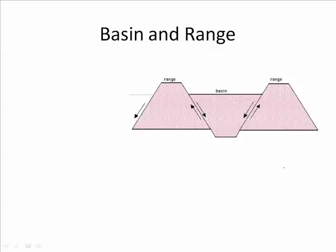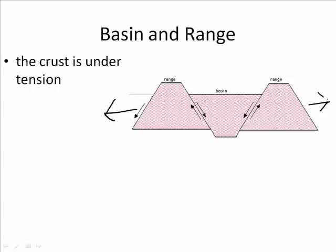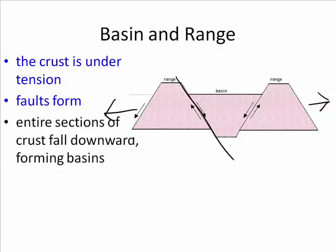Basin and Range, however, does not need to be made of horizontal rock and usually is not. As the crust is under tension and pulling apart, faults form. These faults are called normal faults. Entire sections fall downwards — they become the basin, otherwise known as a graben. The sections left up in the air are the mountain ranges, otherwise known as horsts.